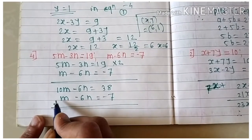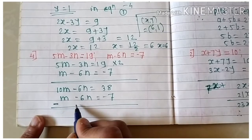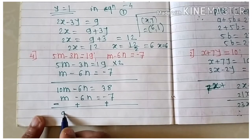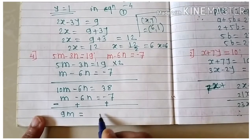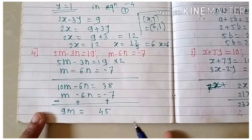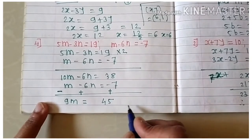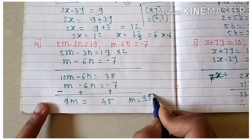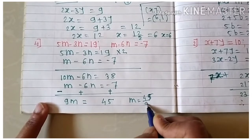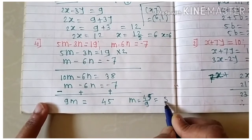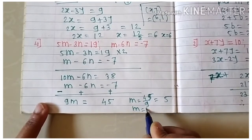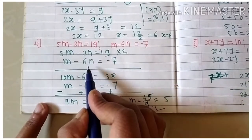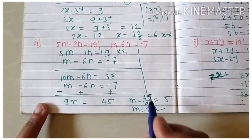From 9m equals 45, dividing both sides by 9 gives m equals 5.